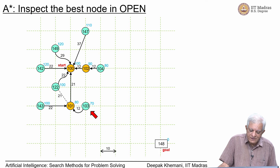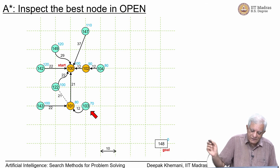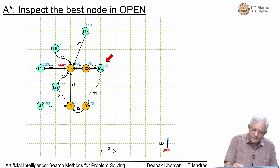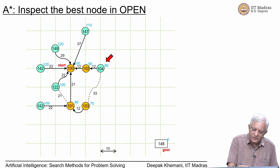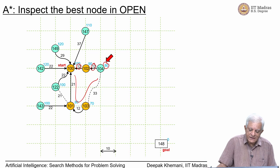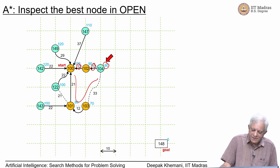A* expands the node with F=102 to give a node with F=104, but then shifts attention back to the node with F=103 because that is cheaper. It expands that node and finds another path to the F=104 node, but that is not the best path. The best path giving F=104 comes from H=80 plus 12 plus 12 giving 104, whereas the alternative would have been a longer path. A* always keeps track of the best paths to each node.